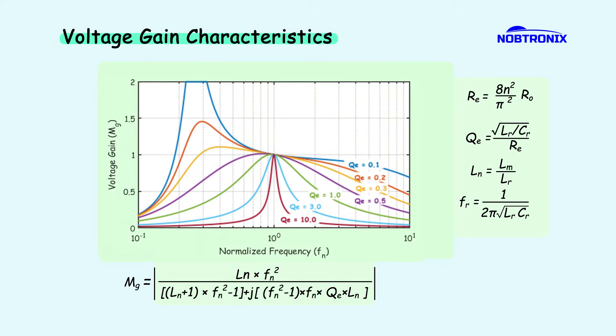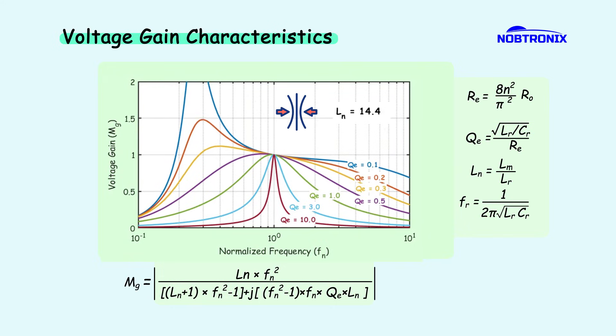In other words, as the load varies from open circuit to short circuit, the quality factor increases from 0 to a very high value. This causes the peak gain to approach 1, and the frequency at which this peak occurs shifts toward the resonant frequency.